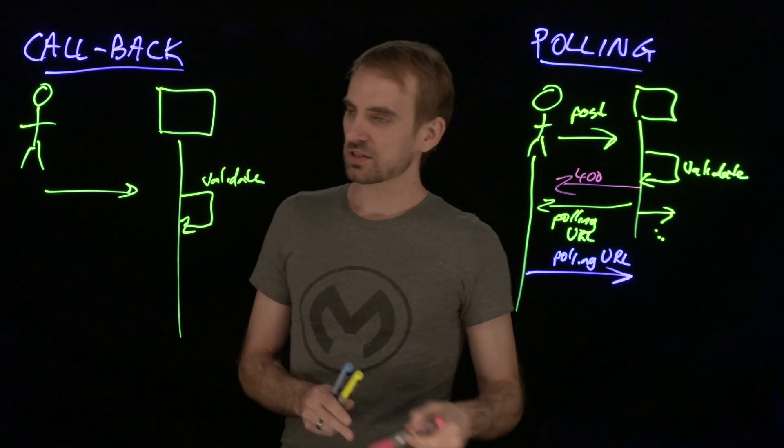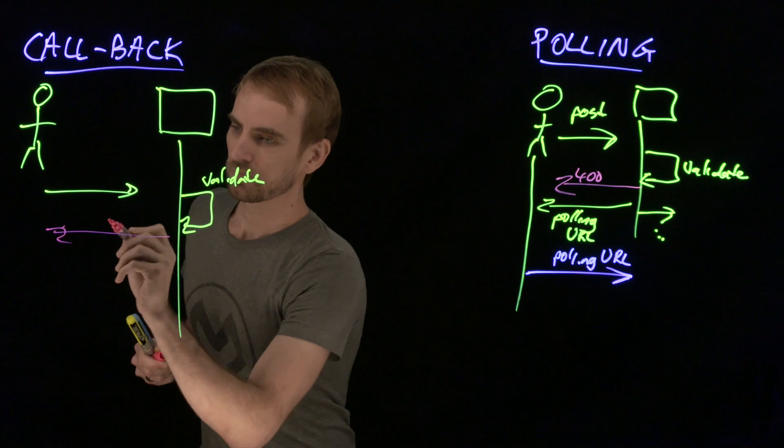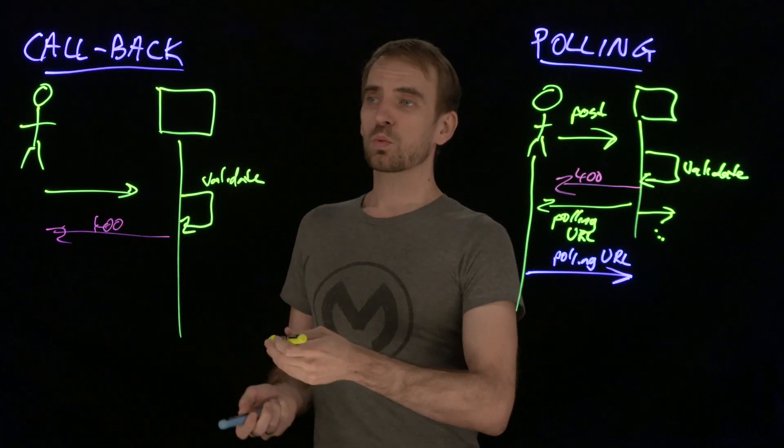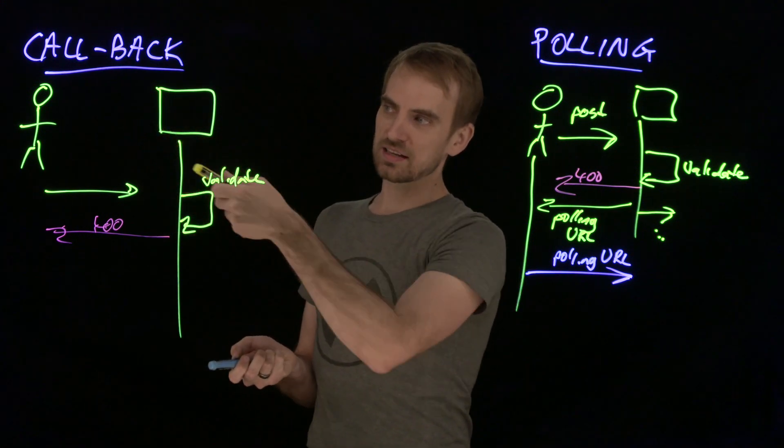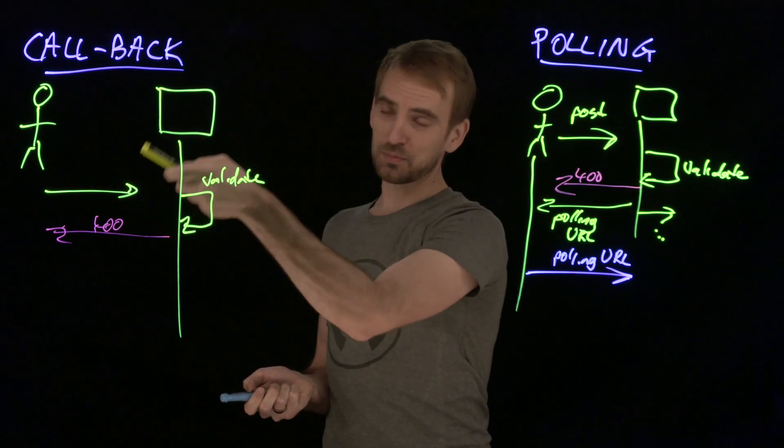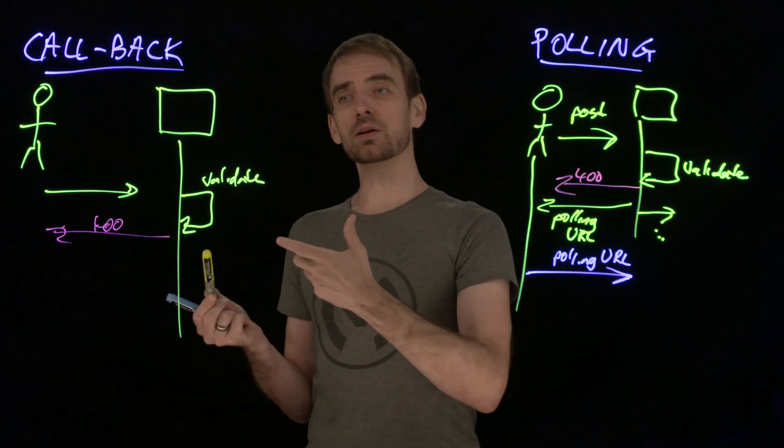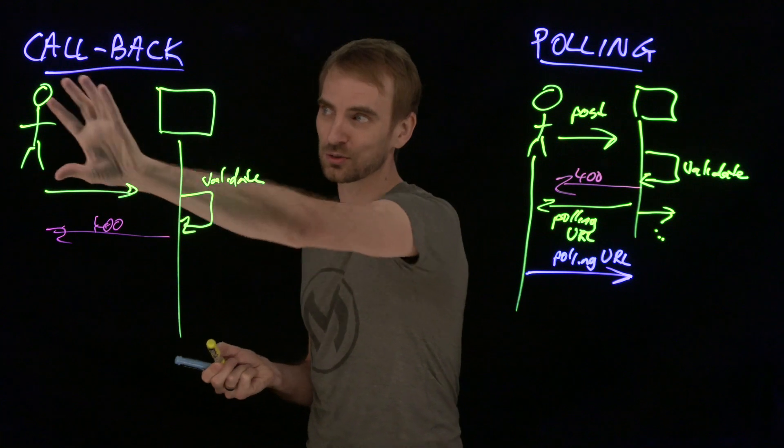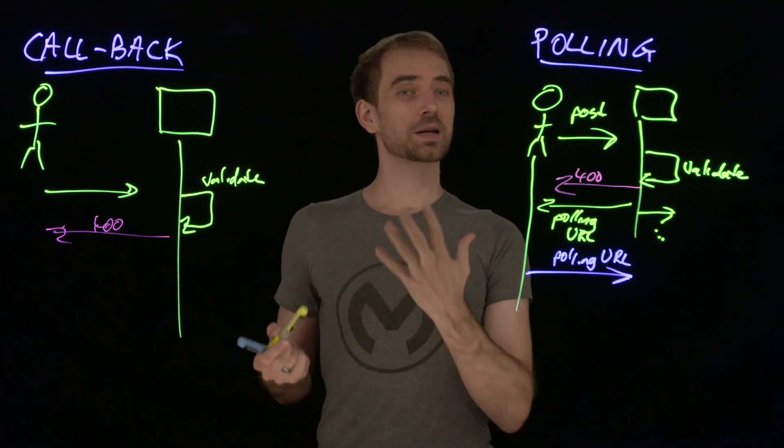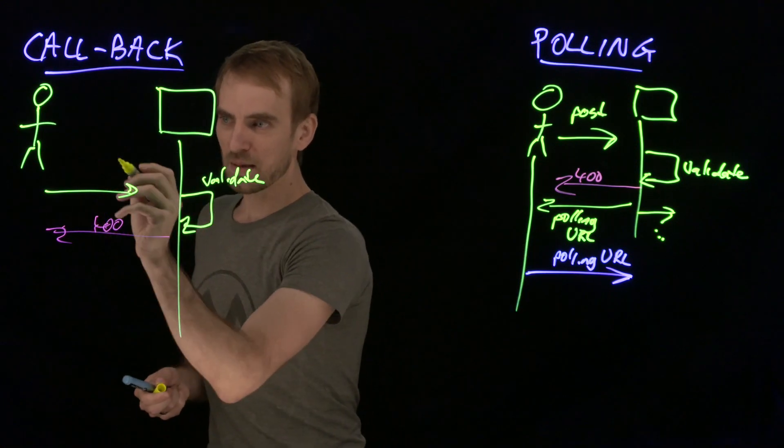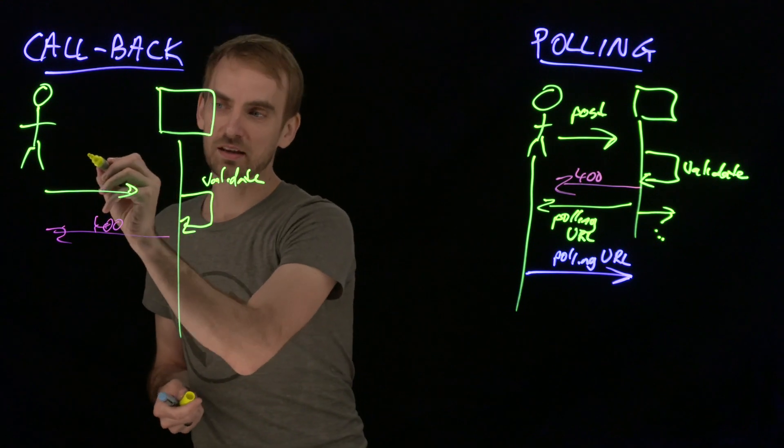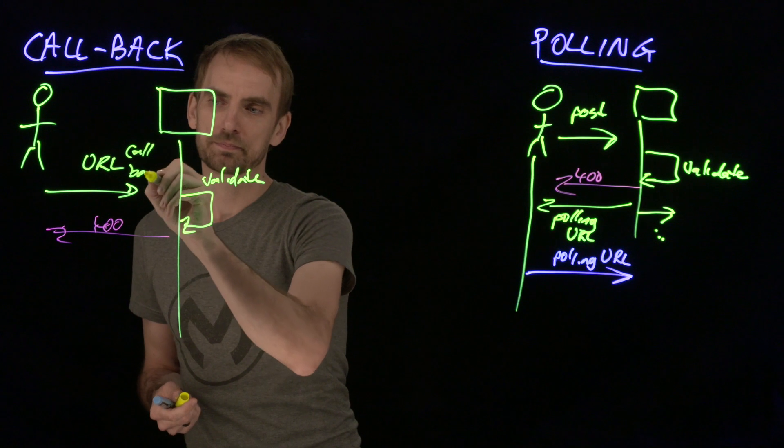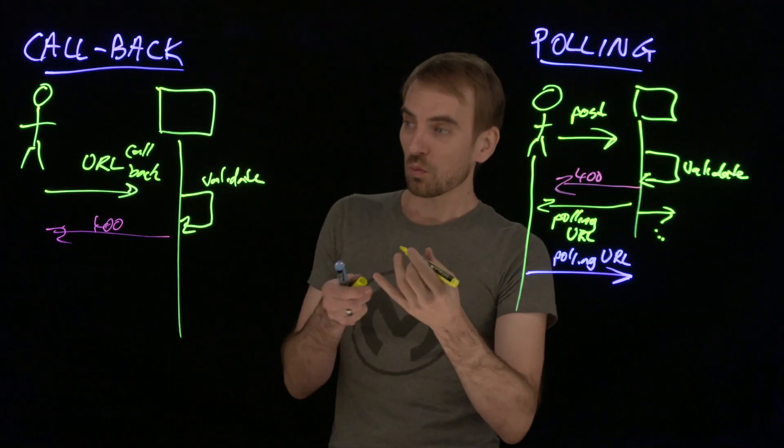If it is, then send back 400 bad data. And if it's okay, then as part of the data that is fed in from the client, we have a URL that this server will become a client and make a callback to the original client, which becomes a server. As far as the information that comes across, we're going to get fed a URL for the callback so that we know where to go.